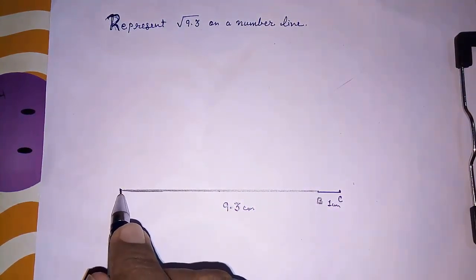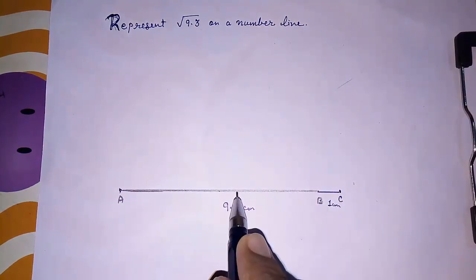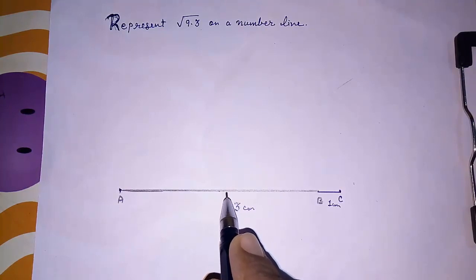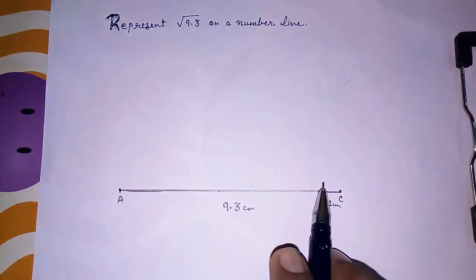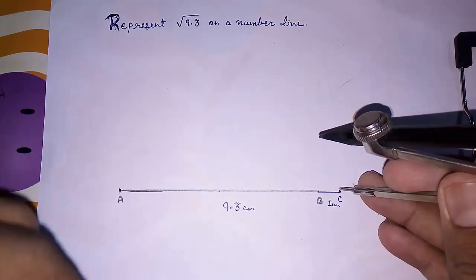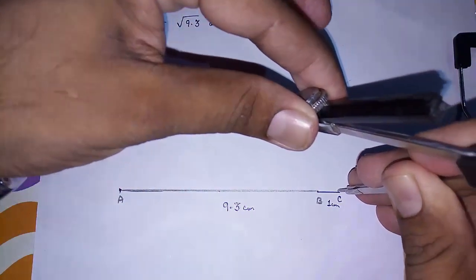Then we have to find the center point or the midpoint of this A and C. Why I am calling it center point, that I am going to explain. First we are going to find midpoint of A and C. We cannot directly find it out, the midpoint.